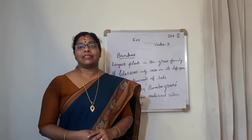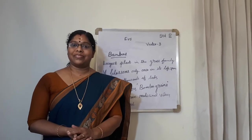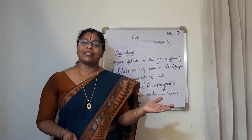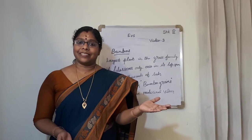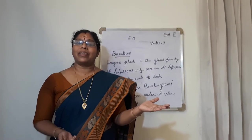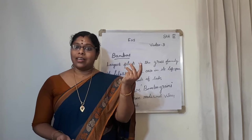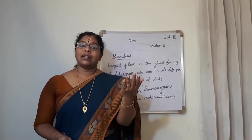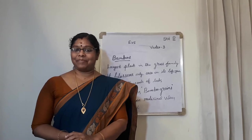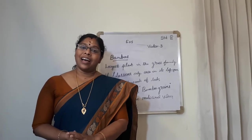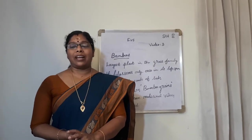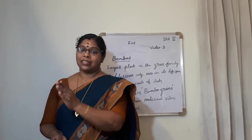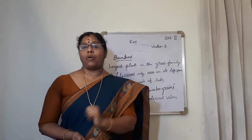Big plants. That is easy for you. Name some big plants. Coconut tree, banyan tree, mango tree, jackfruit tree, etc. I think now all of you got an idea of the different types of plants that we can see around us.